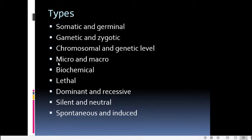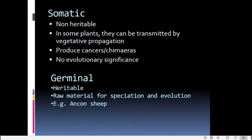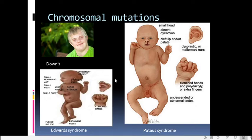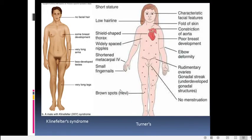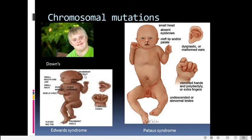Chromosomal mutations result from structural changes in chromosomes — such as deletion or addition on a chromosome arm — or numerical changes, such as an extra chromosome or deficiency of a chromosome. These lead to the formation of syndromes. Examples include Down syndrome, Edwards syndrome, Patau syndrome, Klinefelter syndrome, and Turner syndrome — all examples of chromosomal mutations. If these mutations occur in autosomes they are called autosomal mutations; if in sex chromosomes, sex-linked mutations.